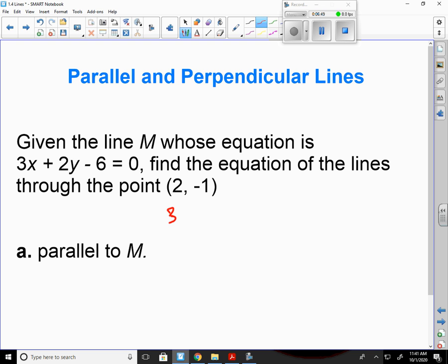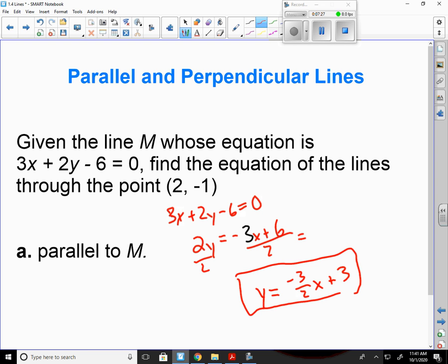So I have 3x plus 2y minus 6 equals 0. Add the 6 over and subtract the 3x over. That gives me 2y equals negative 3x plus 6. Y's still not by itself. Divide by 2. That's going to give me y equals negative 3 halves x plus 3. That's my equation of M.